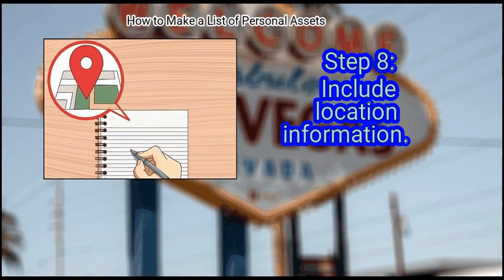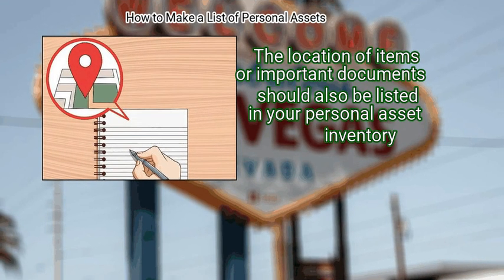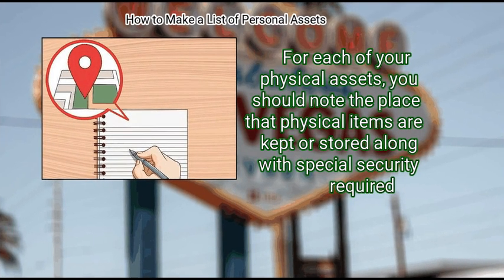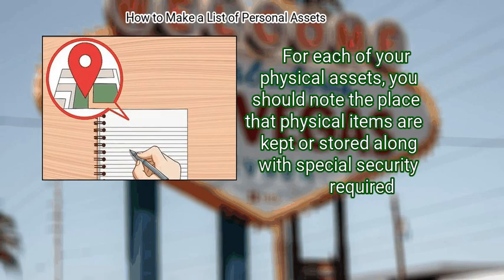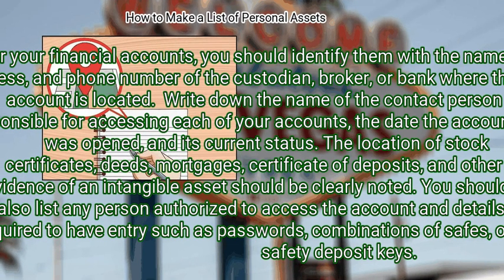Step 8: Include location information. The location of items or important documents should also be listed in your personal asset inventory. For each of your physical assets, you should note the place that physical items are kept or stored along with any special security required. For your financial accounts, you should identify them with the name, address, and phone number of the custodian, broker, or bank where the account is located. Write down the name of the contact person responsible for accessing each account, the date the account was opened, and its current status. The location of stock certificates, deeds, mortgages, and certificates of deposits should be clearly noted. You should also list any person authorized to access the account and details required for entry, such as passwords, combinations of safes, or safety deposit keys.